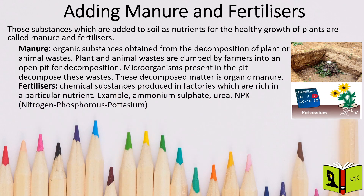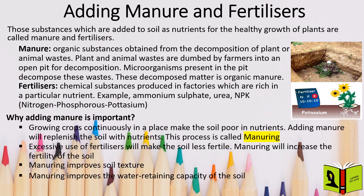Fertilizers are chemical substances produced in factories that are rich in a particular nutrient. Examples include Ammonium Sulphate, Urea, and NPK. Growing crops continuously in a place makes the soil poor in nutrients. Adding manure will replenish the soil with nutrients. This process is called manuring. Excessive use of fertilizers will make the soil less fertile. Manuring will increase the fertility of the soil, improve soil texture, and improve the water retaining capacity of the soil.